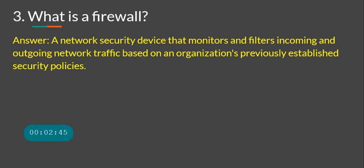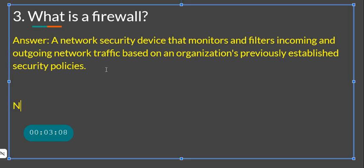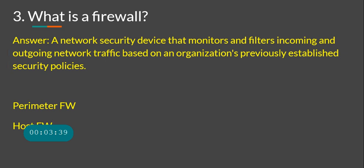What is a firewall? A firewall is a network security device that monitors and filters incoming and outgoing network traffic based on an organization's established security policies. Remember it can be a network-based or perimeter firewall at the edge of your enterprise, or a host-based firewall that is part of your operating system, like Windows Firewall.